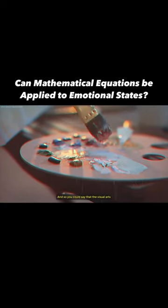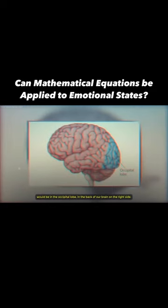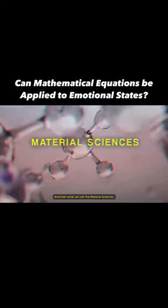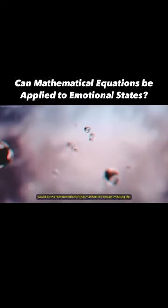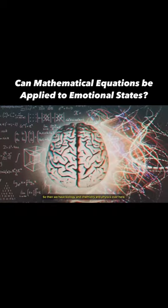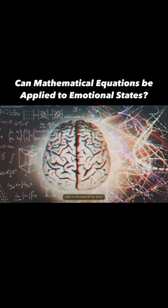You could say that the visual arts would be in the occipital lobe, in the back of our brain on the right side. And then what we call the material sciences would be the representation of that manifested form—art imitating life. So we have biology, chemistry, and physics in the back of our brain.